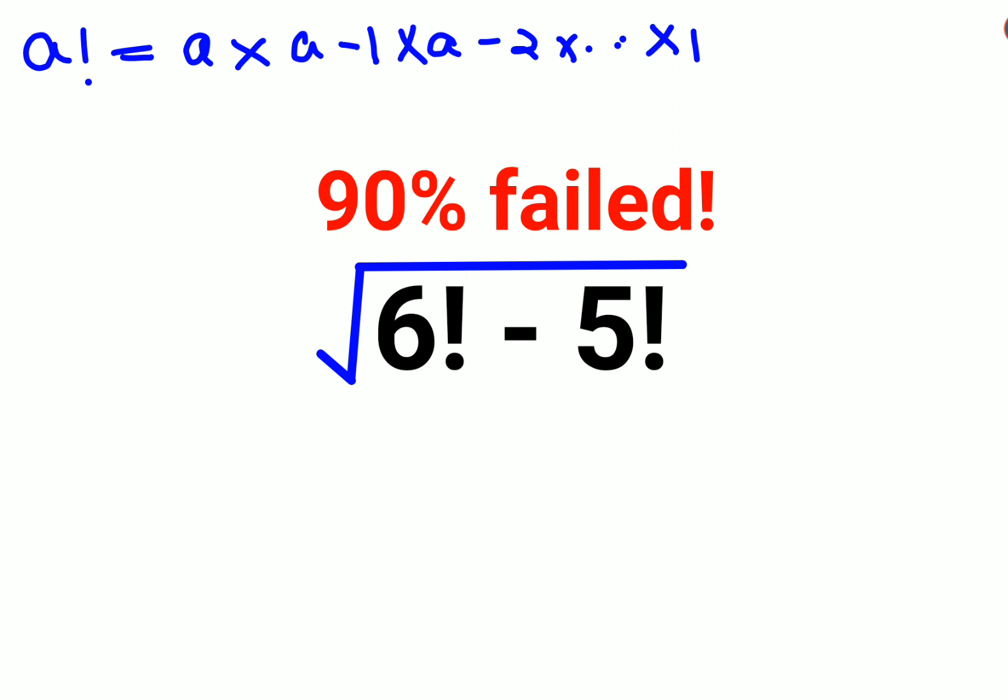Let's understand what 2 factorial would be. That would be 2 into 1. 3 factorial would be 3 into 2 into 1. Similarly, 4 factorial would be 4 into 3 into 2 into 1.